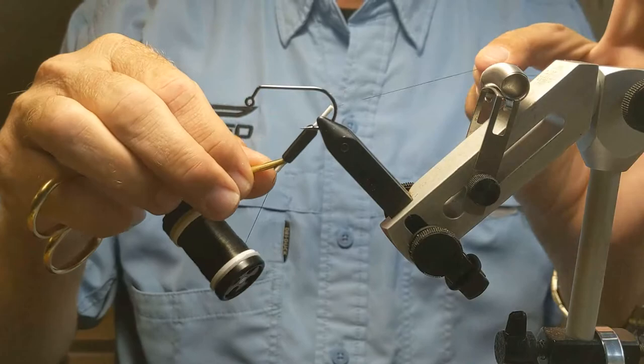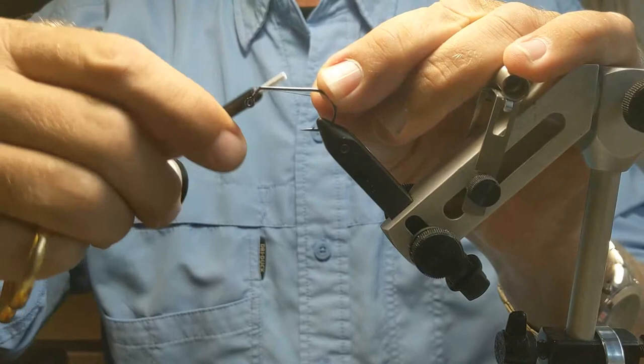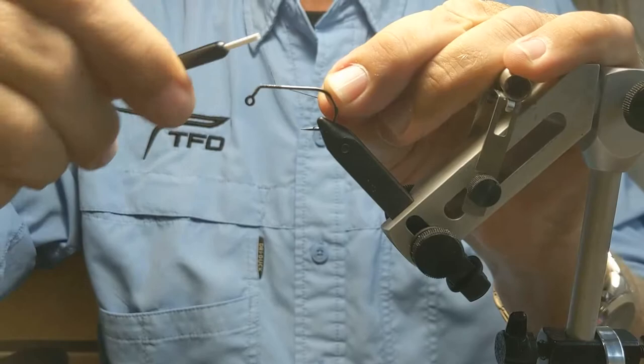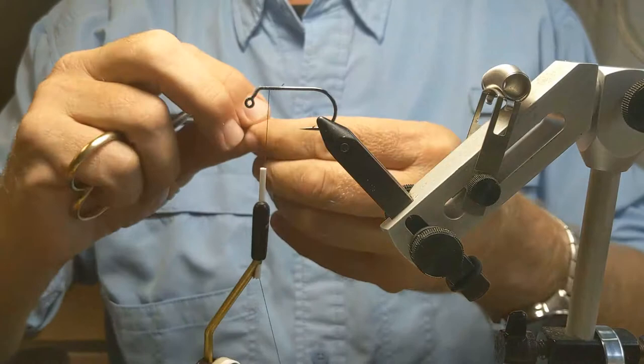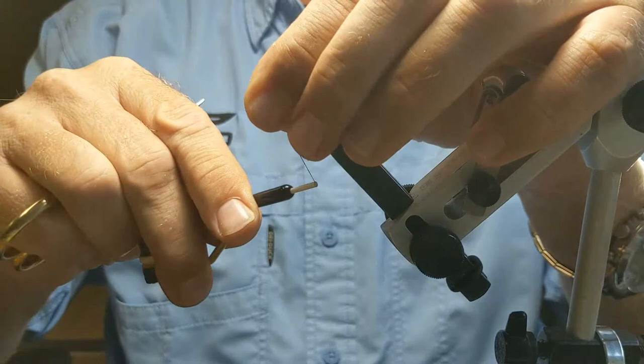Using a dark gray UTC 140 thread. I tie them with red, but I also find it more effective when it doesn't have a hot spot on the head. I'm going to lay a thread base, and I start at the eye and work it up that 60-degree shank because we're going to tie our materials onto that at some point. I want to have a good thread base there. I tie the eye fairly far forward because I'm not tying any material ahead of the eye on the horizontal part of the hook. I'm tying everything on the 60-degree shank.